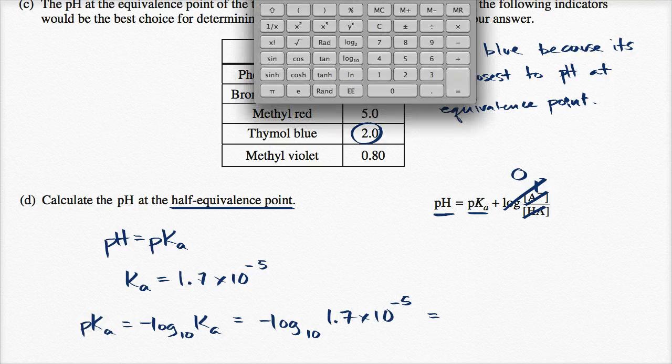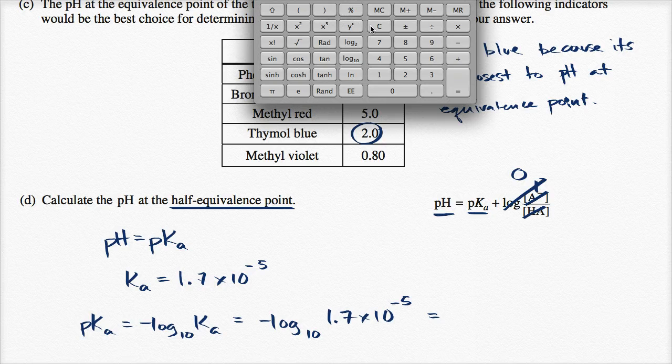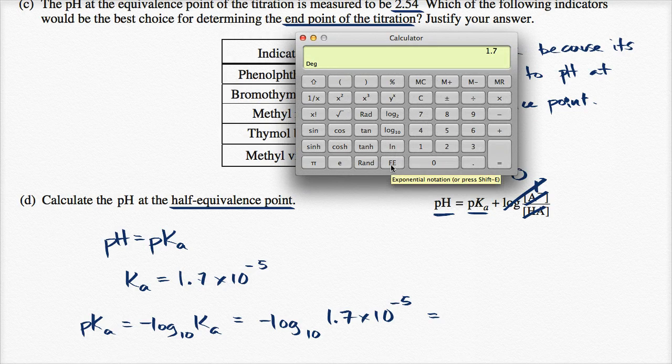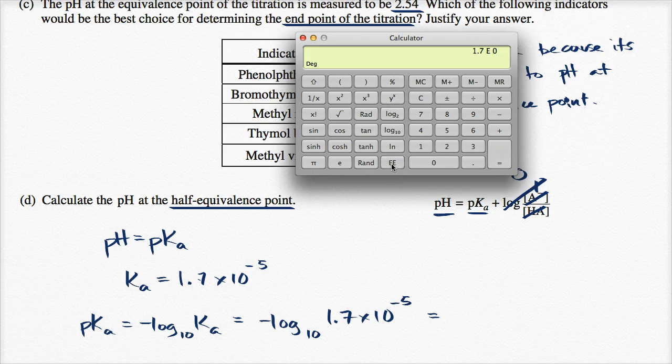Let me get a calculator out. I'll write 1.7, these two capital E's, that's times 10 to the, so times 10 to the, not the fifth, the negative fifth power.